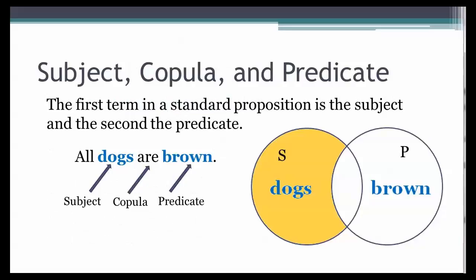A proposition has three parts: a subject, copula, and predicate. The subject is the first term of the proposition and the predicate the second term. The copula, which means joining together and is the root of copulation, is the term that indicates the relationship between the two categories. It is traditional to use a capital S and a capital P to symbolize subject and predicate.